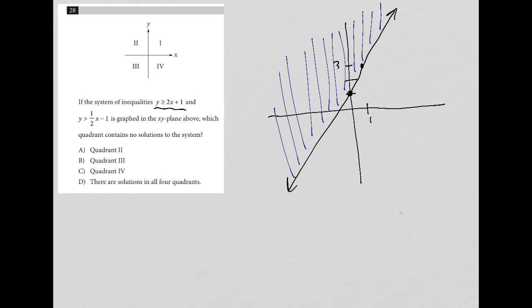The next inequality says y is greater than one-half x minus 1. So in this case, my y-intercept is at negative 1. And the slope is one-half. So up 1 and over 2. So I go up 1 to the origin, over 2. So my next point would be right there.